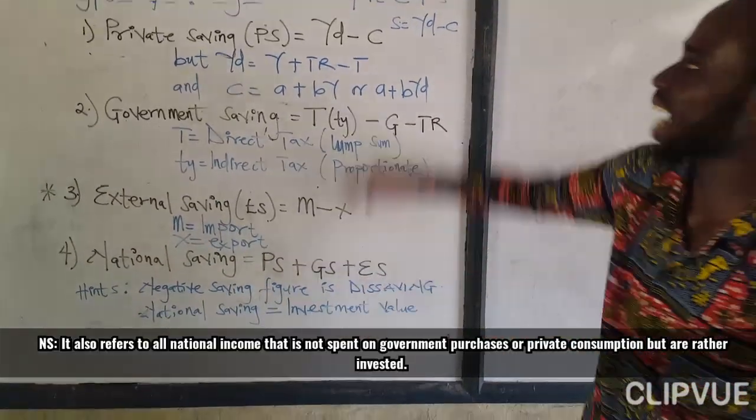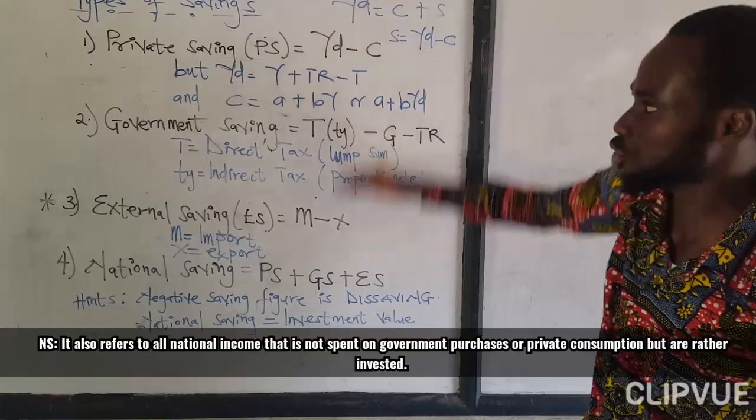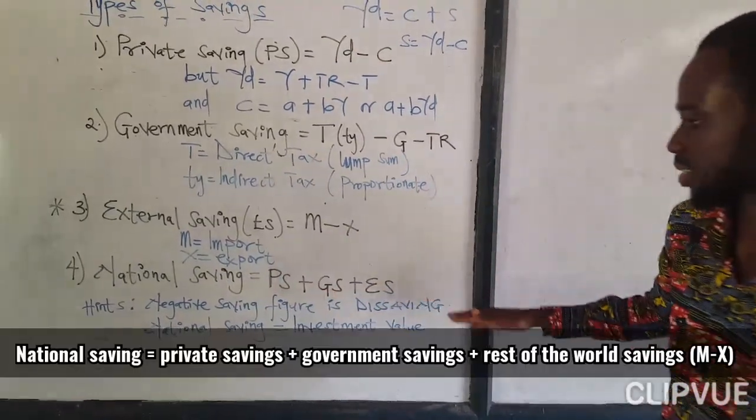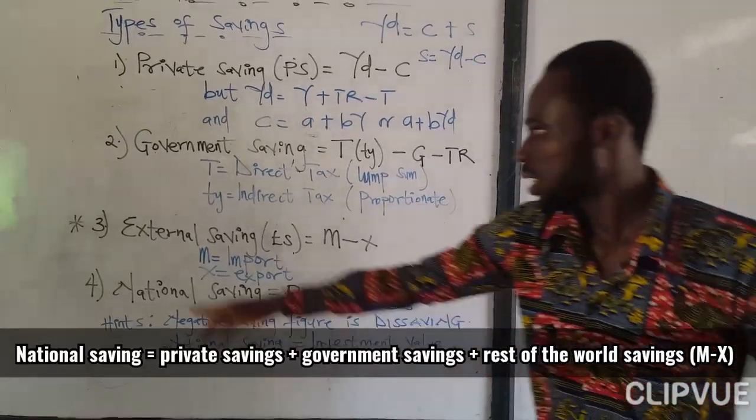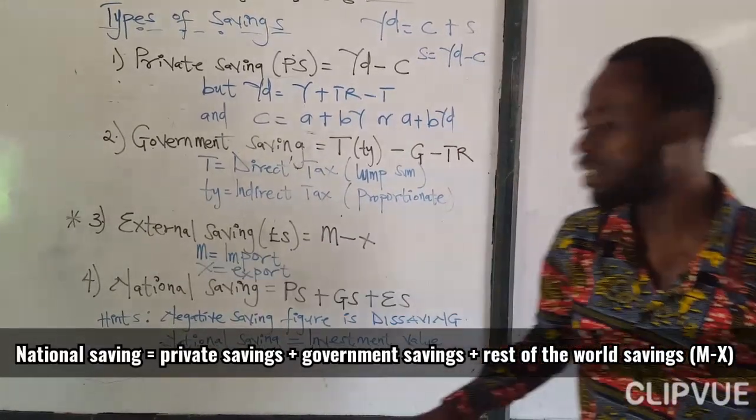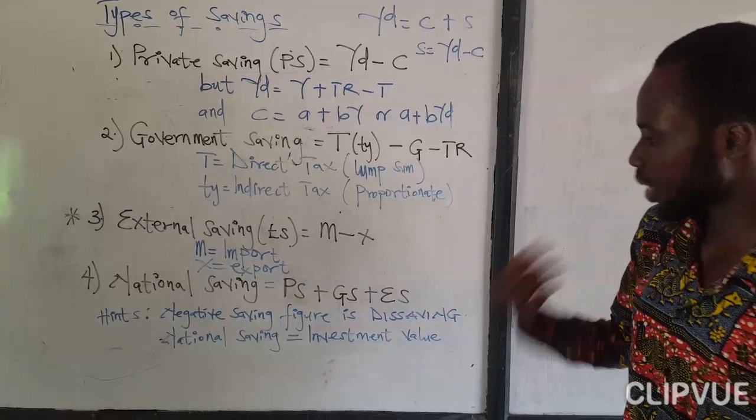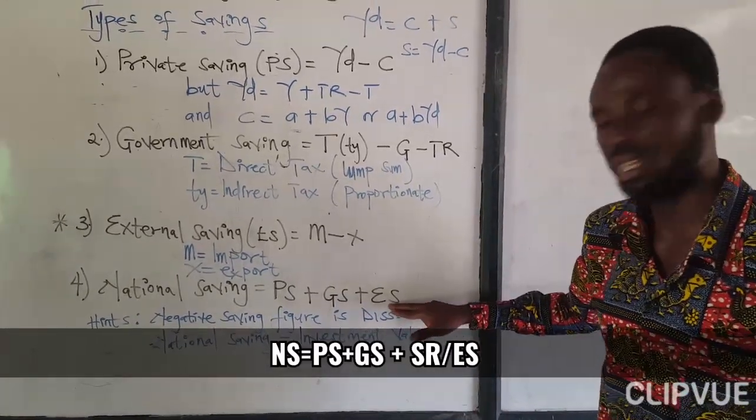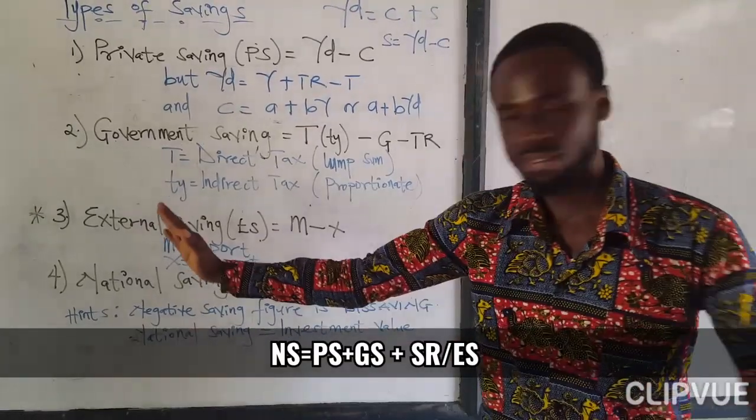Now the national savings is equal to the aggregate or the summation of all the savings. When you put all of them together, you are going to get a national savings. Trust me, I have told you that we calculate for external savings whereby the economy is open. So if the economy is open whereby there is import and export, you calculate for external savings. That's when you add external savings to the national savings.